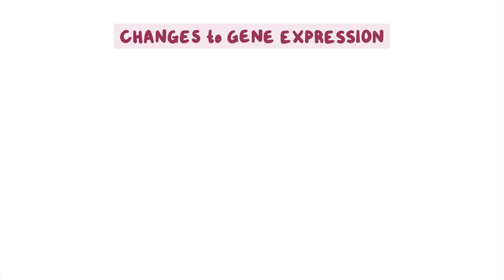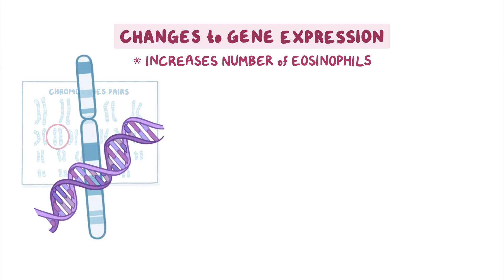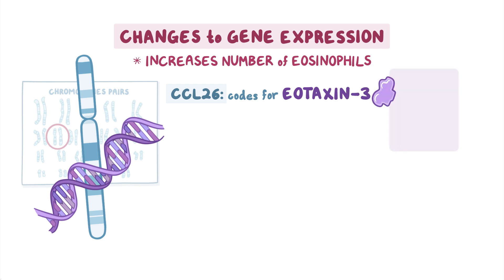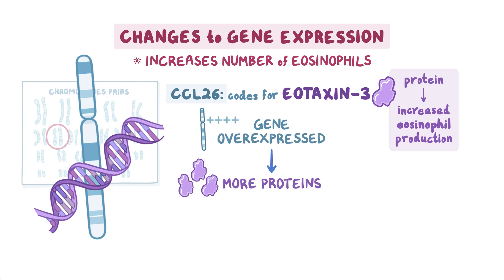Additionally, changes to gene expression appear to play a role in increasing the number of eosinophils in a person with EOE. A primary gene involved in people with EOE is CCL26, which encodes for eotaxin-3. Eotaxin-3 is a protein that triggers increased eosinophil production, and the gene is often overexpressed,